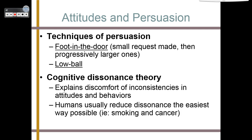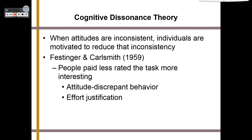Another attitude theory is cognitive dissonance theory. This explains the discomfort of inconsistencies in attitudes and behaviors. Dissonance means discomfort, cognitive means thinking — so you could translate it as 'mental discomfort theory.' It says that sometimes we have attitudes that don't match our behaviors, making us feel uncomfortable, and we try to eliminate that discomfort the easiest way possible. Festinger and Carlsmith did a very interesting experiment in 1959 involving attitude-discrepant behavior and effort justification.